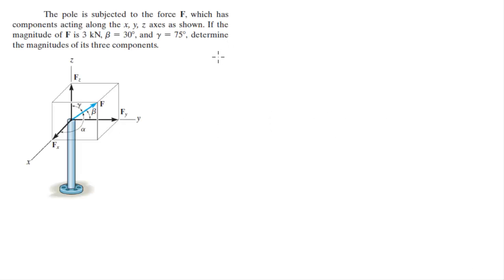Alright guys, now we're going to do this problem that says the pole is subjected to a force F which has components along the x, y and z axis. If the magnitude of F is 3, and you got beta equals 30 and this angle is equal to 75, determine the magnitude of the three components.